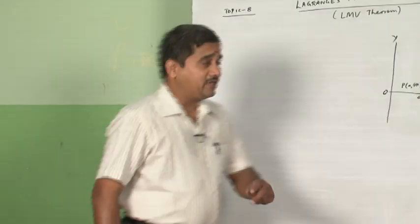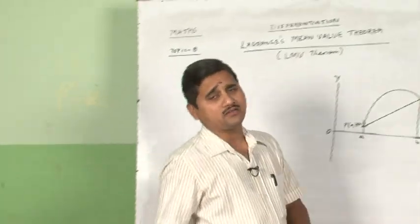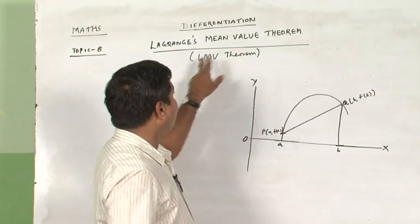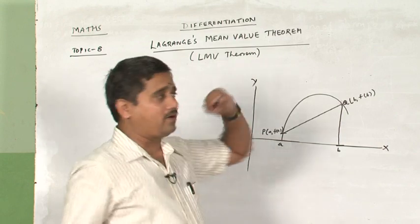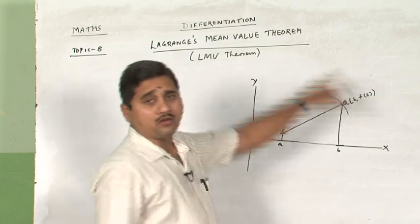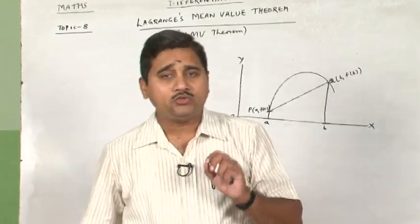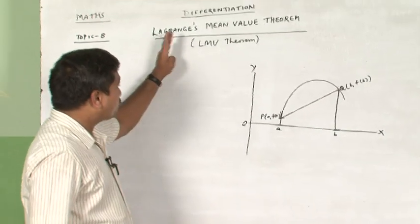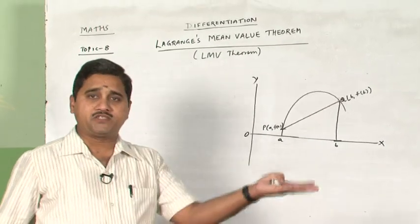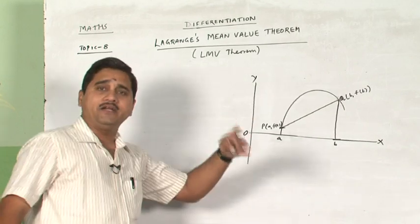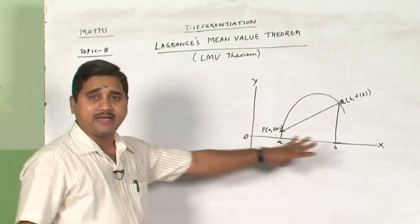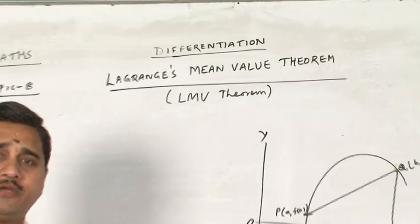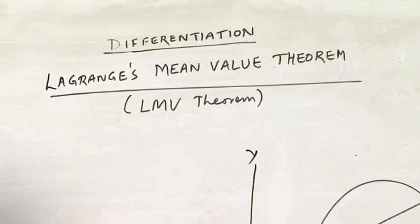Dear children, we are now coming to the last and final topic: Lagrange's Mean Value Theorem, also called LMV theorem or simply the mean value theorem. Please remember this is the actual theorem on which Rolle's theorem is based. We have already learned Rolle's; now we will learn Lagrange's, and you will understand the specialty and difference between the two.